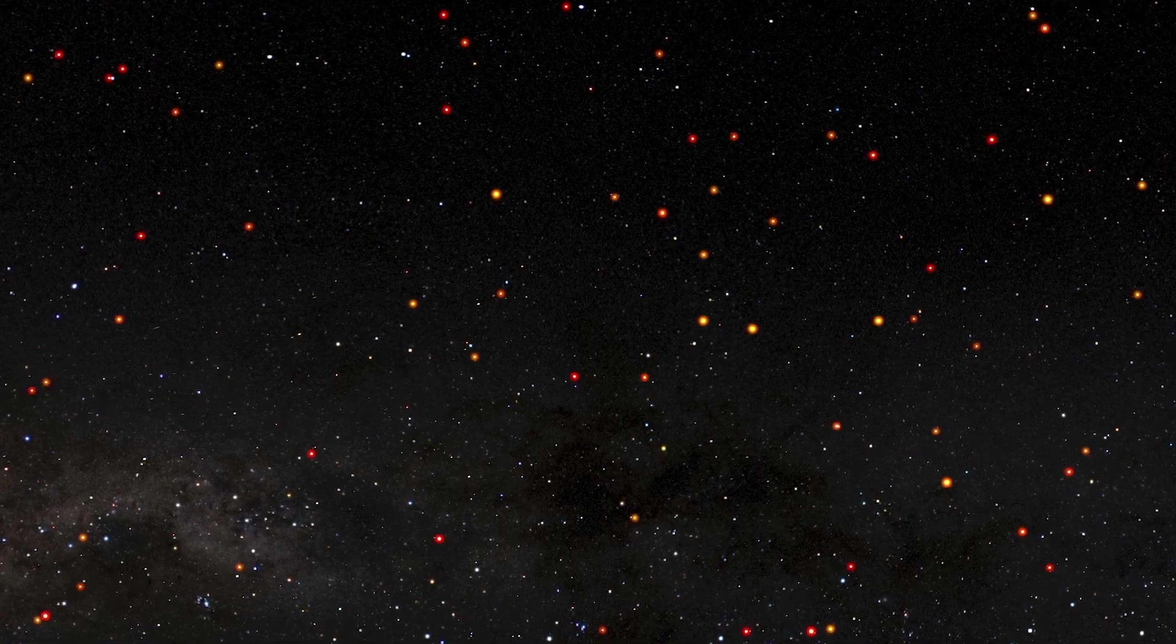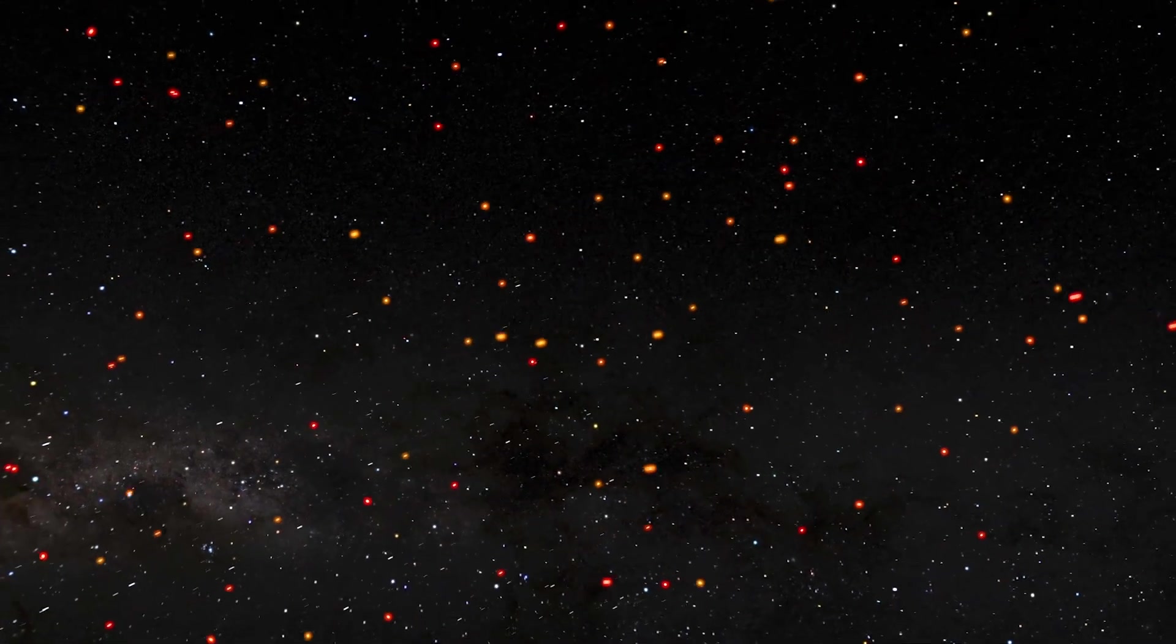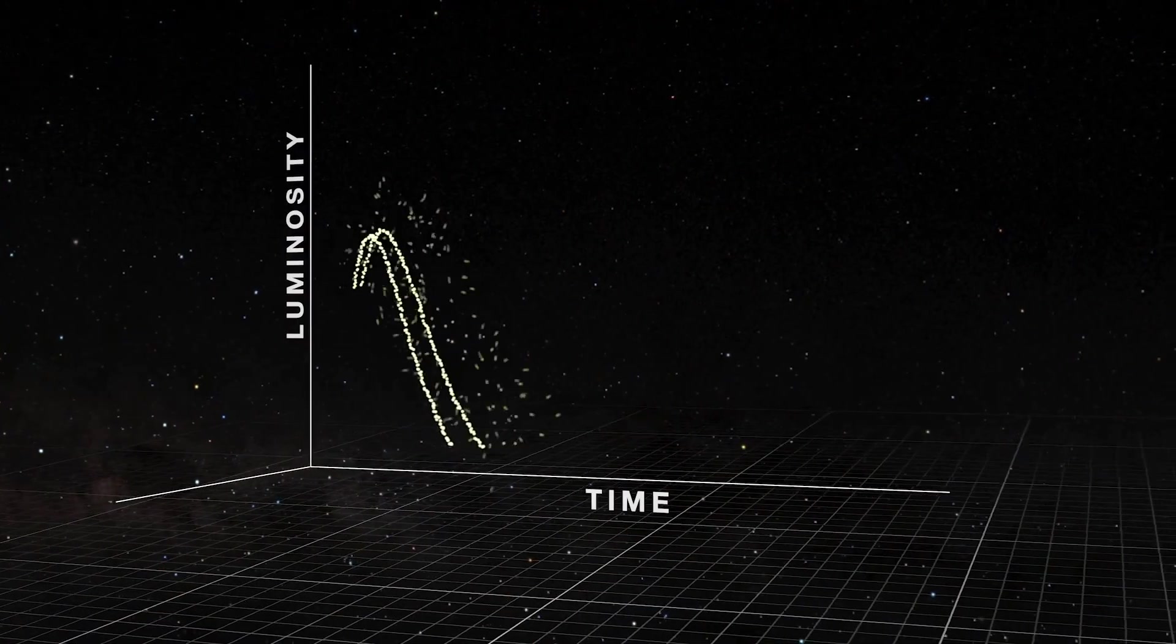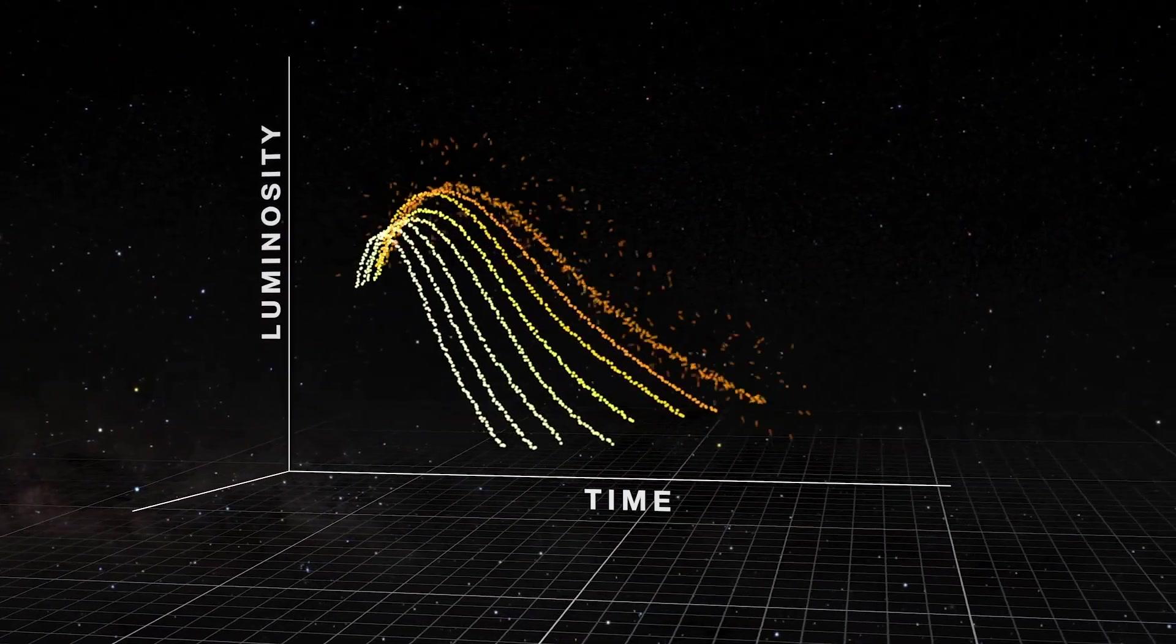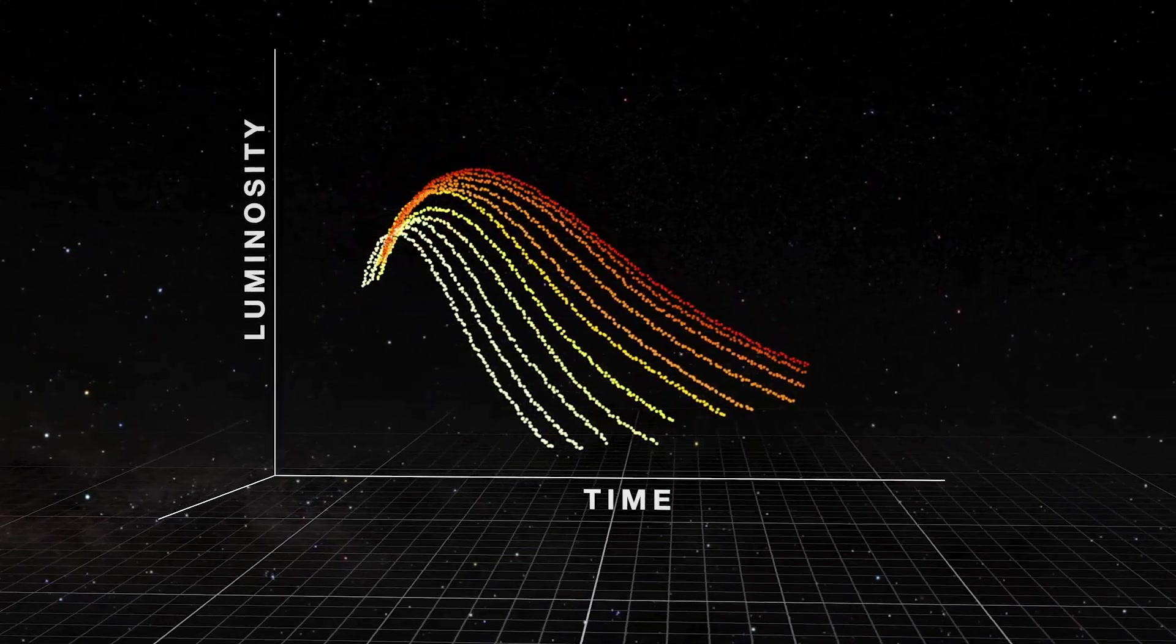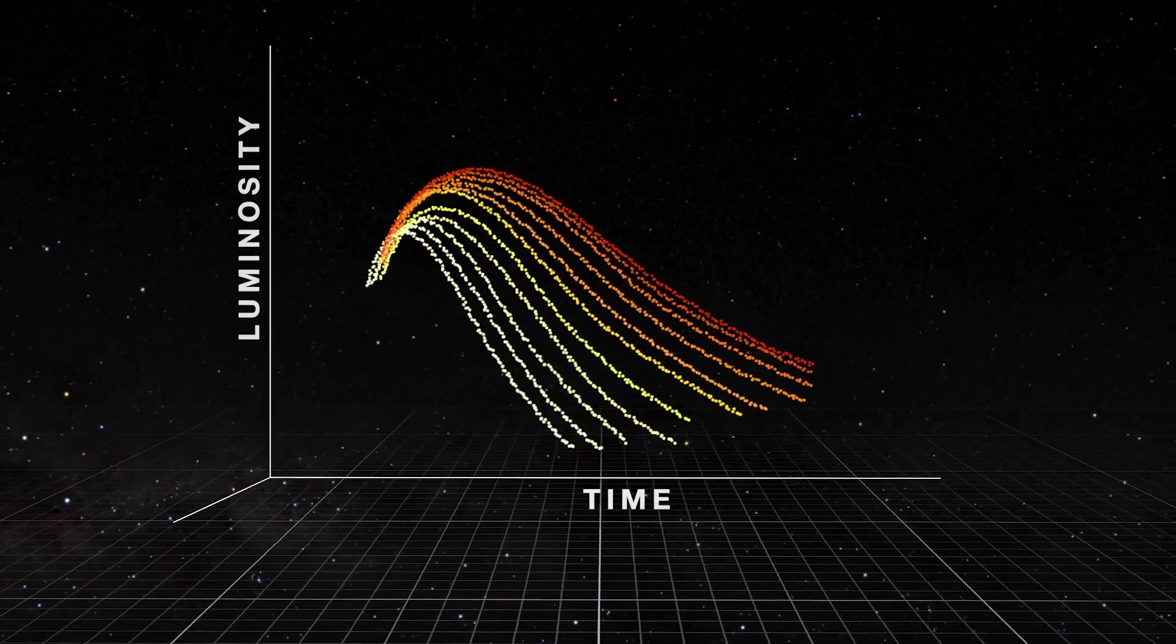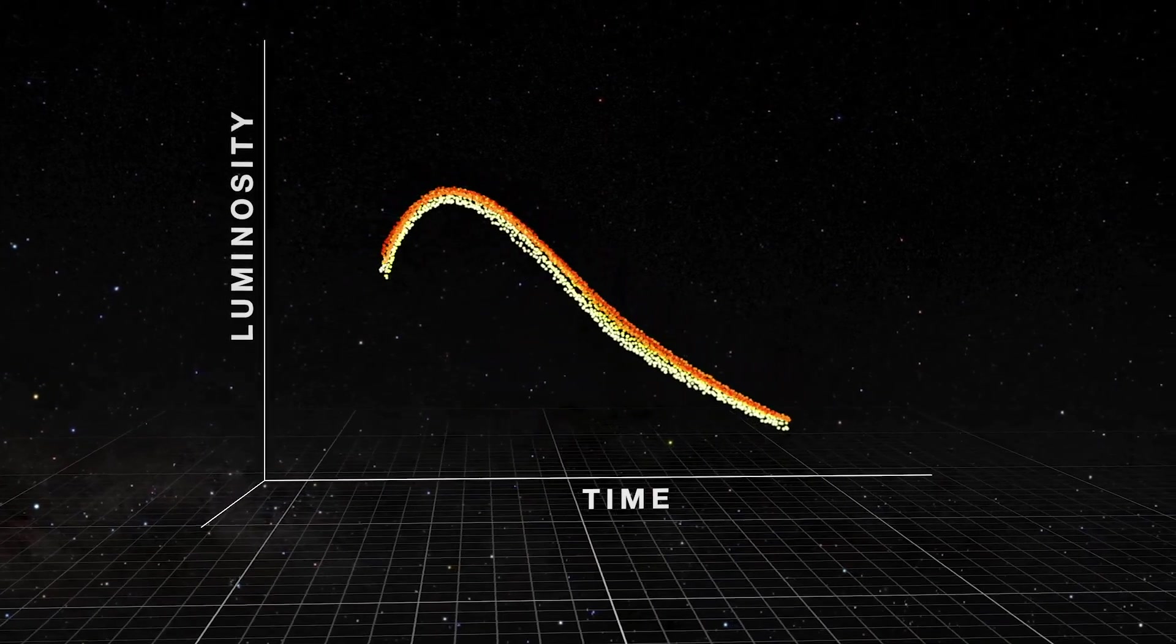But we can only probe it at the moment out to a certain distance scale, a distant redshift of order one. And when you look at the different models of dark energy and ask what does this luminosity, the brightness of these objects, how does it look as a function of the redshift, how far away, all the models look fairly similar out to a redshift of one or so.